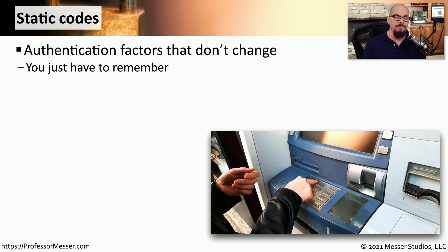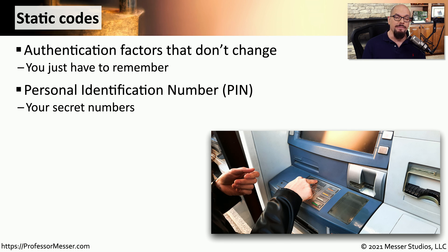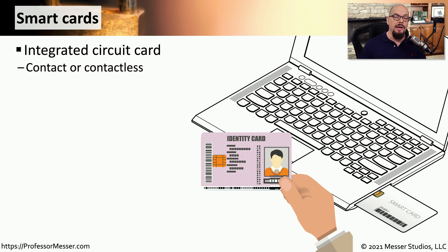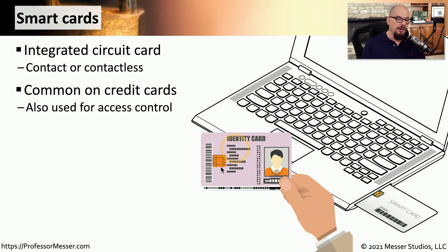There are some authentication factors that never change. These are values that you've remembered, and you have to remember that particular value to complete the authentication process. A good example is a personal identification number, or PIN — numbers we use when authenticating with an automatic teller machine. We might also have an alphanumeric code, using a set of numbers and letters to provide a static code for authentication. A password or passphrase is a good example of an alphanumeric static code. If you carry around a smart card, you may also use that for authentication — either by sliding it into a laptop as a contact method, or holding it near a reader as a contactless method. This type of smart card functionality is very common on credit cards, and can also be used for access control cards to gain access to laptops, computers, and other devices.